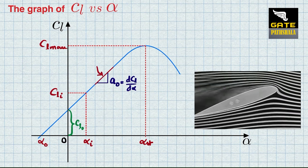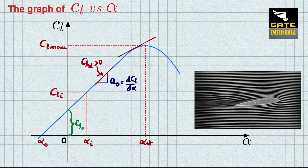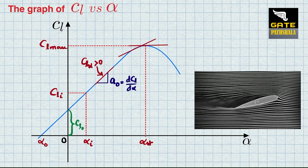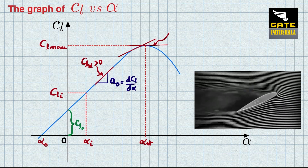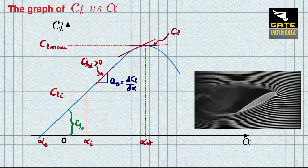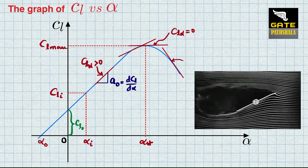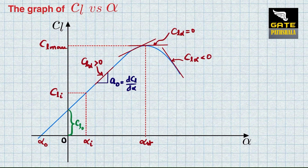CL_alpha is greater than zero in the linear region, but as the angle of attack increases, the lift curve slope starts to decrease. At the stall angle alpha_st, the lift curve slope becomes zero and the lift coefficient ceases to grow further. Beyond that, if the angle of attack is further increased, the lift coefficient starts to decrease, making the lift curve slope less than zero. This angle where CL_alpha equals zero and CL is maximum is called the stalling angle, or critical angle of attack.